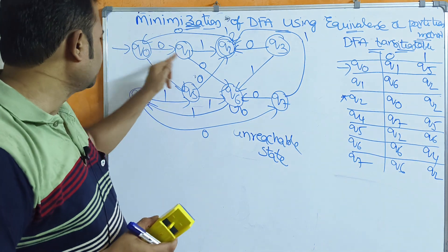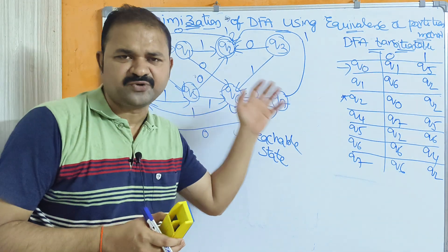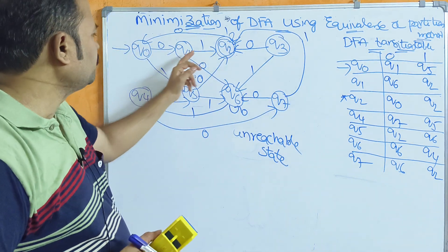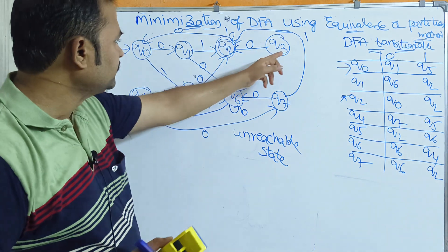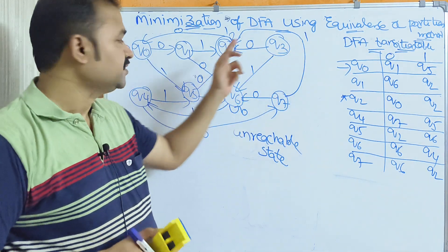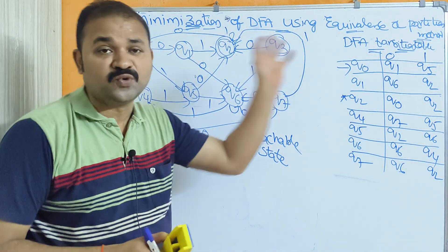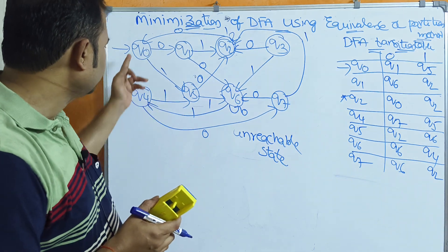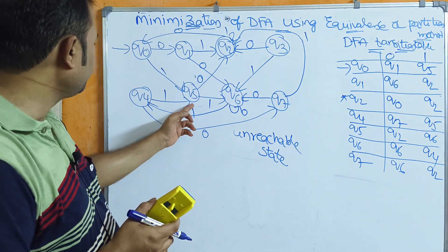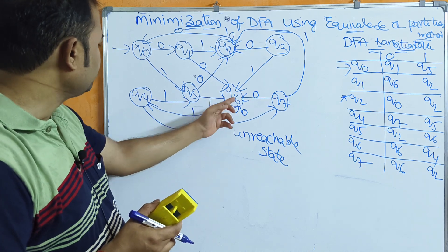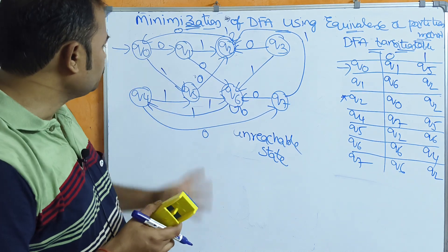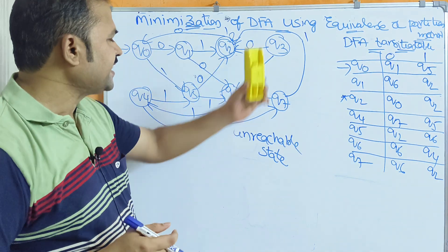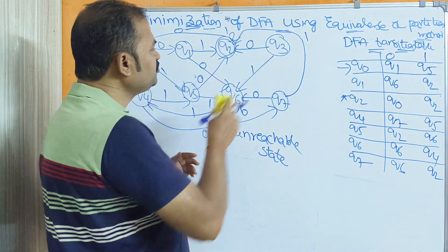If you take Q1, we have a direct path so we can traverse from Q0 to Q1. If you take Q2, we can traverse via Q1: Q0 to Q1, then Q1 to Q2. Q3 is an unreachable state — from Q0 it is not possible to move to Q3. Q4, Q5, Q6 are all reachable states. All states are reachable except Q3, so we can remove Q3 from the diagram.